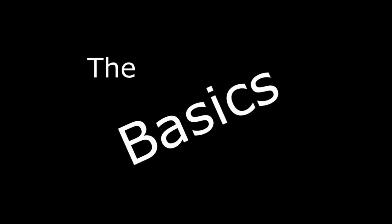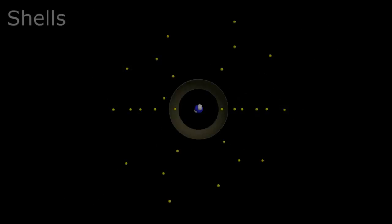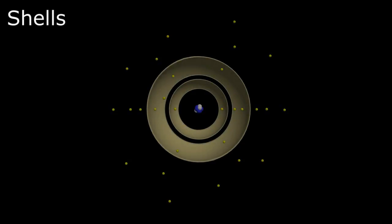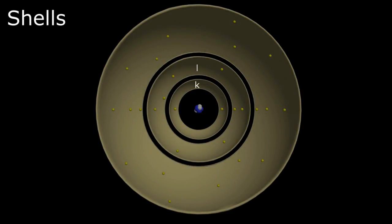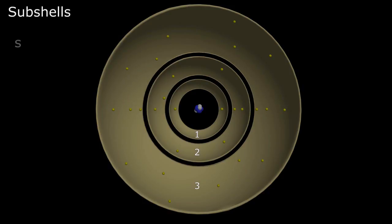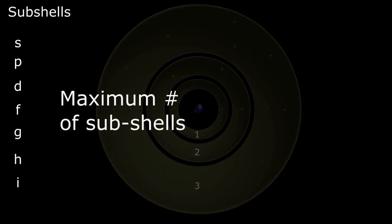Let's start with a few basic rules and definitions. The shells are the largest division of the electron groups and are labeled either with the letters starting with K on the innermost shell, or more practically, numerically, with the innermost shell labeled number 1. In our model, only three shells are depicted. Each shell contains a series of subshells labeled sequentially S, P, D, F, G, H, and I. The maximum number of subshells in each shell is determined by the shell number itself.